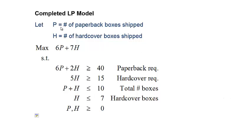With decision variables p equal to number of paperback boxes shipped and h equal to number of hardcover boxes shipped, we want to maximize 6p plus 7h, subject to: paperback requirement 6p plus 2h greater than or equal to 40; hardcover requirement 5h greater than or equal to 15; total boxes p plus h less than or equal to 10; hardcover boxes h less than or equal to 7; and non-negativity constraints.